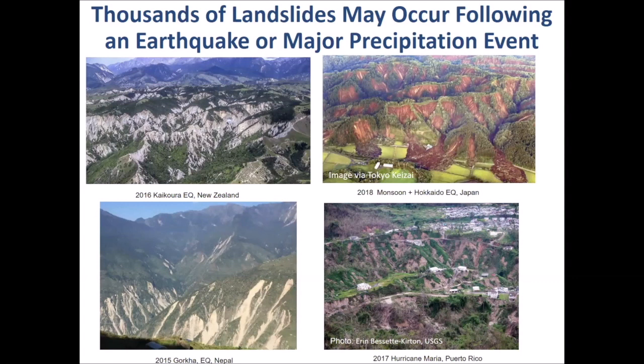A year later, the combination of a monsoon followed by an earthquake resulted in topography full of landslide scars in Hokkaido, Japan. The landslides caused by these natural disasters are responsible for numerous deaths, significant infrastructure damage, they impact the economy, and they slow down the community's efforts to bounce back and restore the way of life for many years to come.